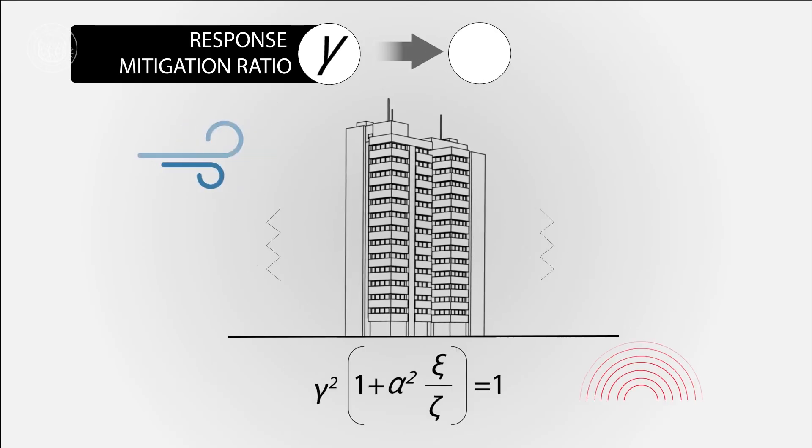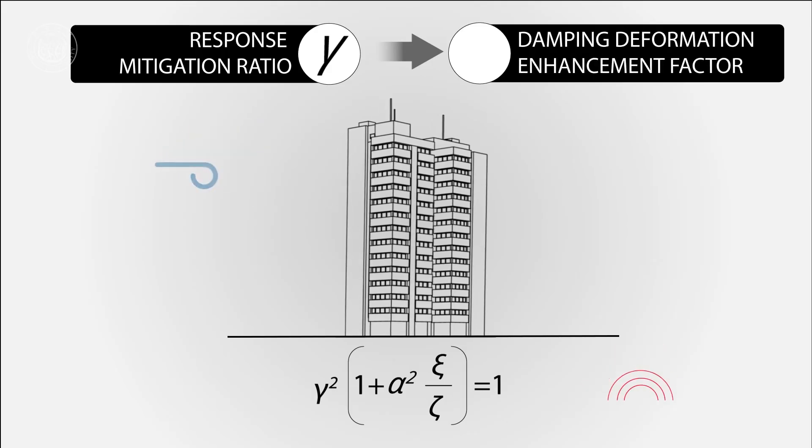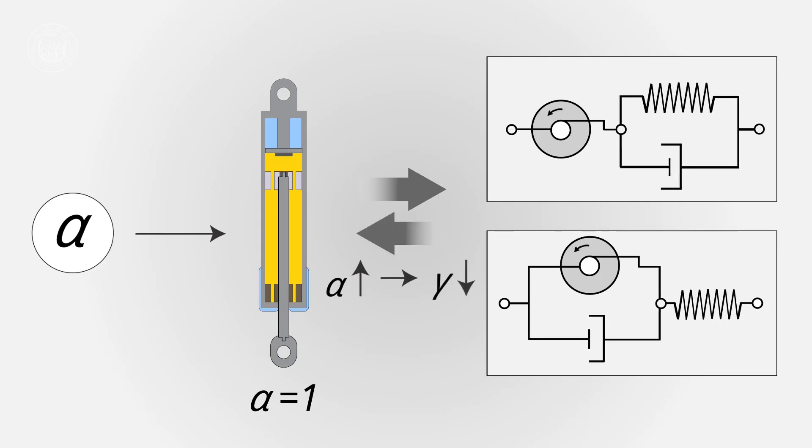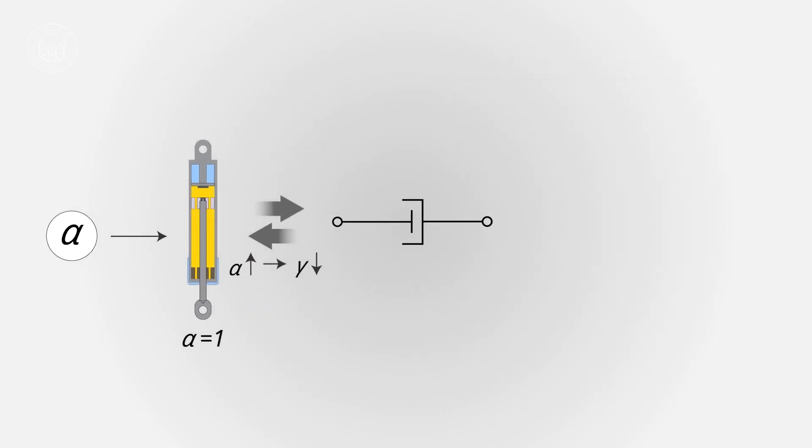Compared with structures with viscous damper where alpha is equal to 1, the increase of alpha by the inertor system provides a significant reduction in the gamma, corresponding to better control effect.